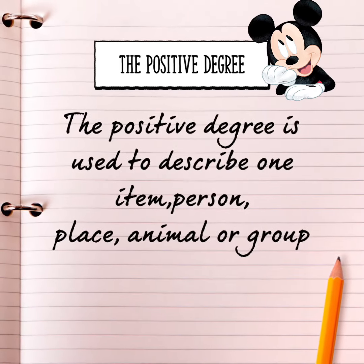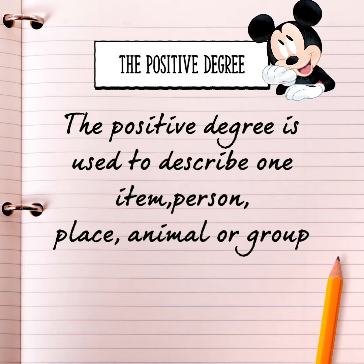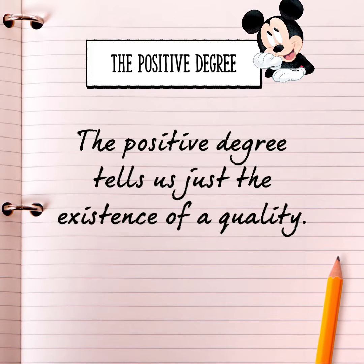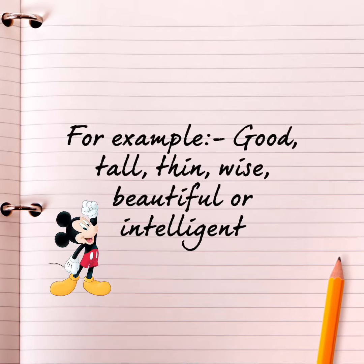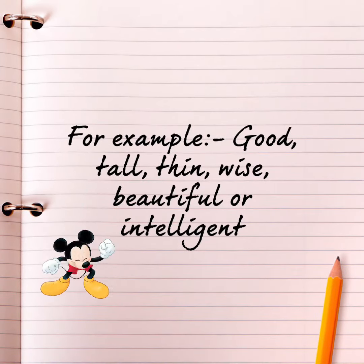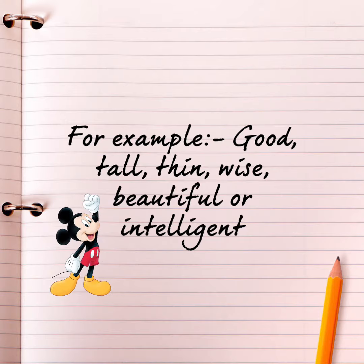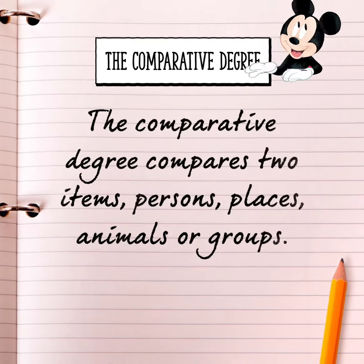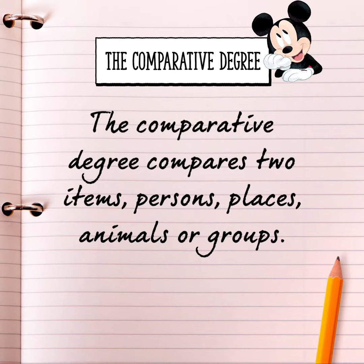The positive degree is used to describe one item, person, place, animal or group. The positive degree tells us just the existence of a quality. For example: good, tall, thin, wise, beautiful or intelligent.